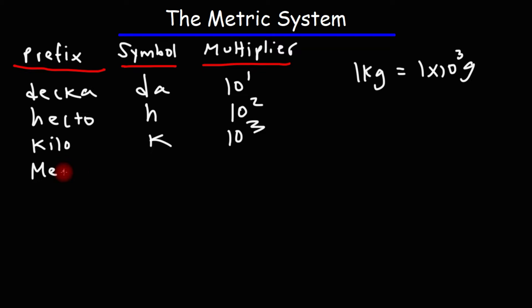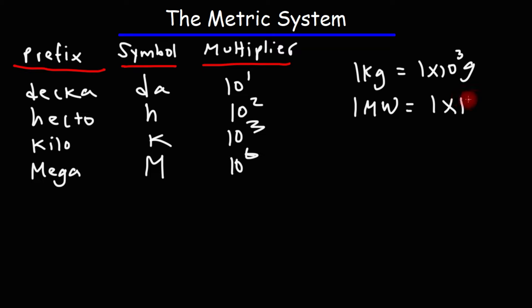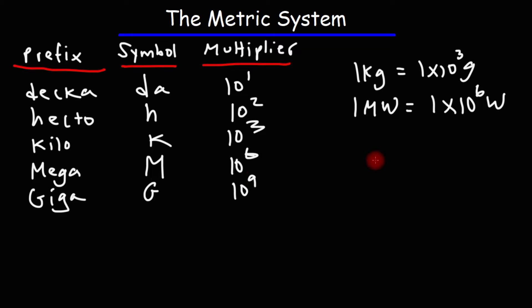Next up, we have mega. It's not lowercase but capital M. This is 10 to the 6th — basically a million. So a megawatt power plant produces 1 times 10 to the 6th watts, or a million watts. Next up, we have giga, represented by capital G. Giga is 10 to the 9, which is equivalent to a billion. So a gigajoule is 1 times 10 to the 9 joules.